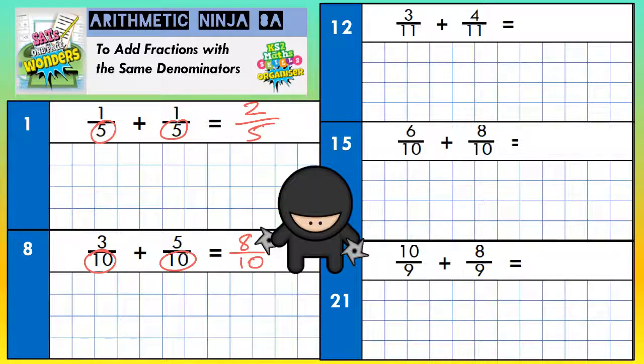In year six SATs, you would get the mark if you left it as eight-tenths. But there is also an equivalent fraction. If you're going to simplify it, you might notice that both eight and ten are in the two-times table. So if you divide them both by two, eight divided by two is four, ten divided by two is five. So you could put four-fifths. Four-fifths or eight-tenths, they're both equivalent fractions. Either would be acceptable in year six. In year seven, you'd be expected to simplify it to get four-fifths.